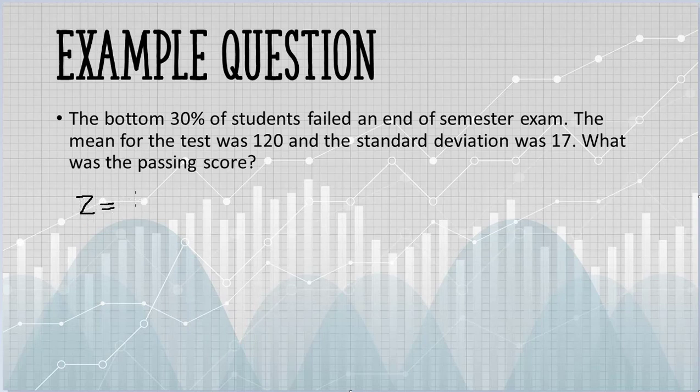I'm going to use a z-score formula to answer this question. Our z-score is equal to x, that's the score we're interested in, minus mu, the mean, all over the standard deviation. An equivalent version of the formula, written in terms of x: the z-score multiplied by sigma, add mu, the mean.